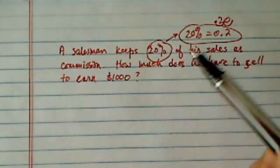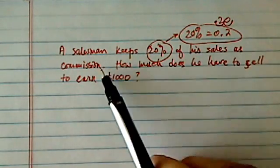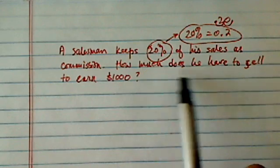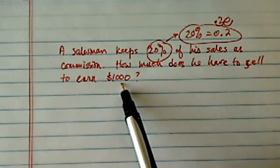He keeps 0.2, or about 20% of his sales, as a commission. And the question asks, how much does he have to sell in order to earn $1,000?